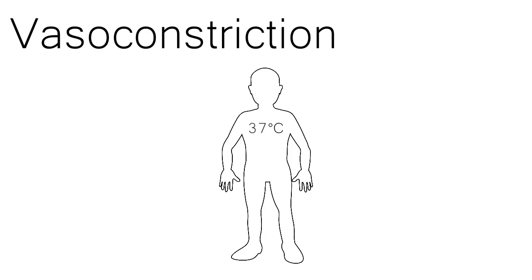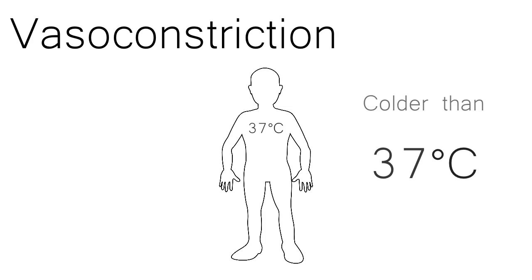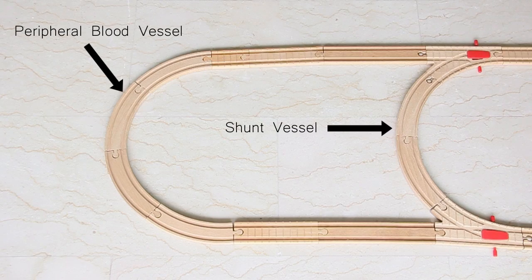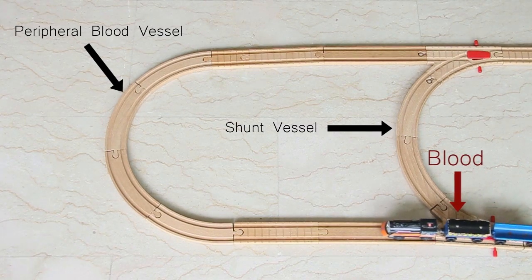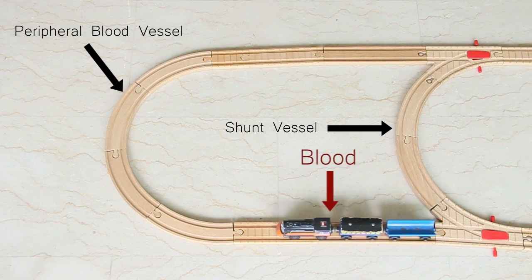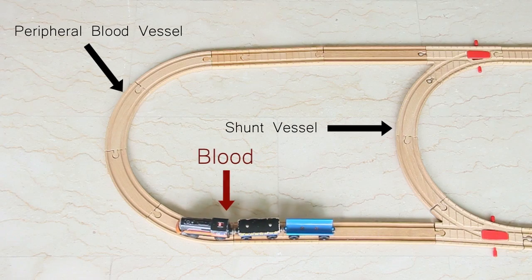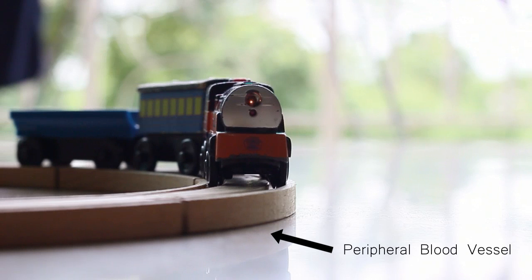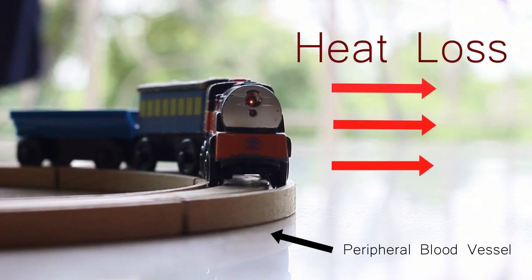Vasoconstriction occurs when the temperature outside the body is colder than 37 degrees, so the body needs to keep warm in order to keep working. In this example, let's make the train track the blood vessels, and the train the blood travelling through it. The blood travels down the vessel until it reaches the surface of the skin. When it reaches the edge of the vessel, the heat in the blood is lost through the skin, making the blood colder.